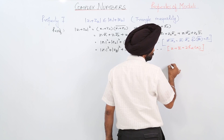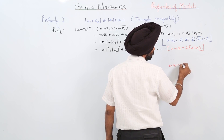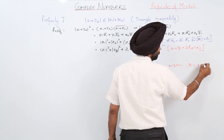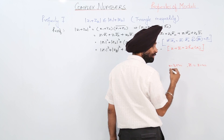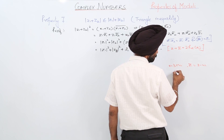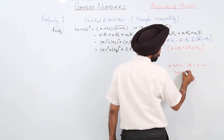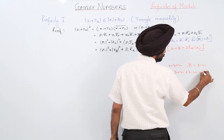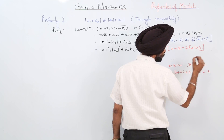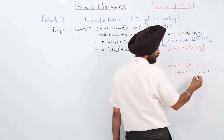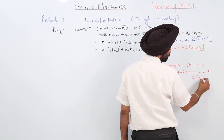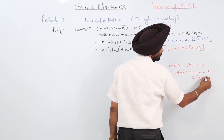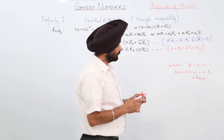For example, if Z = 3 + 4i, then conjugate of Z = 3 − 4i. Adding them: (3 + 4i) + (3 − 4i) = 6, which is twice of 3 — that is, twice the real part of Z. This justifies writing the sum as 2·Re(Z).